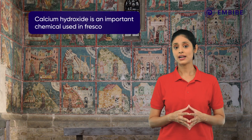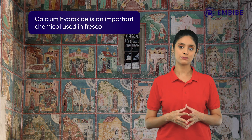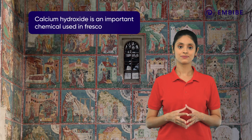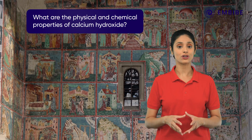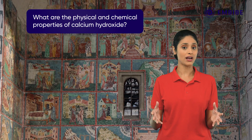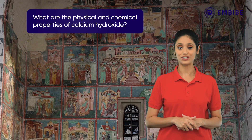Fresco is a technique of mural painting in which pigment is applied to wet lime plaster. Water merges the pigment with the plaster, which then becomes an integral part of the wall painting. Calcium hydroxide is a chemical involved in this process. Learn about the physical and chemical properties of this special compound in the upcoming videos.